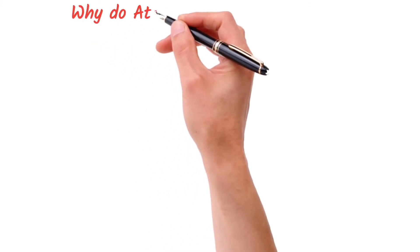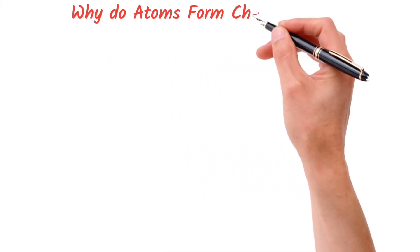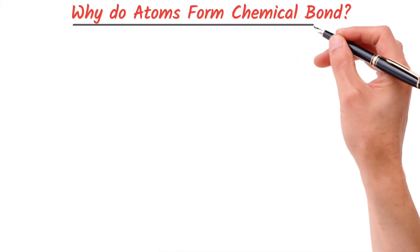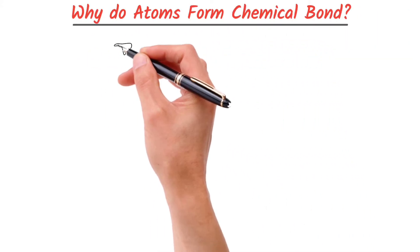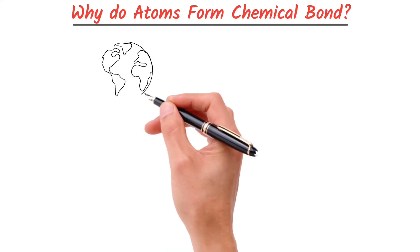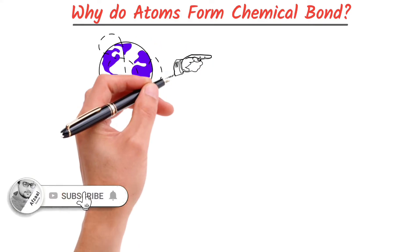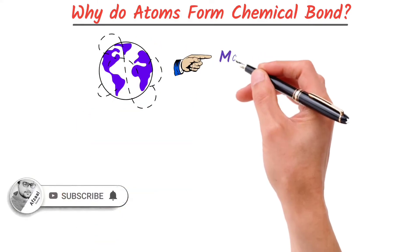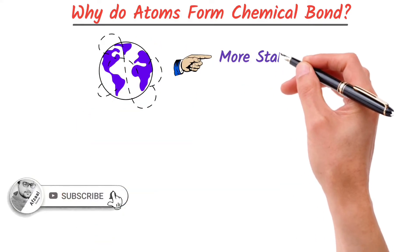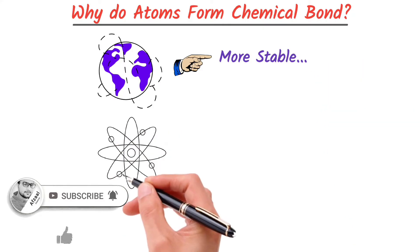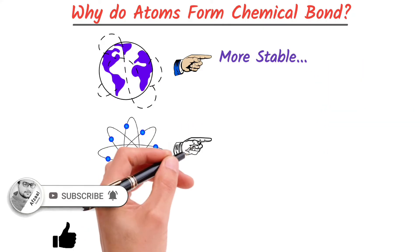Why do atoms form chemical bonds? It is a universal rule that everything in this world tends to become more stable. Similarly, atoms form chemical bonds to get stability.